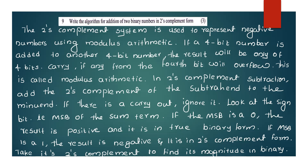The algorithm: If there is a carry-out, ignore it. Look at the sign bit — that is the MSB of the result. If the MSB is 0, then the result is positive and it is in true binary form. If the MSB is 1, the result is negative and it is in 2's complement form.